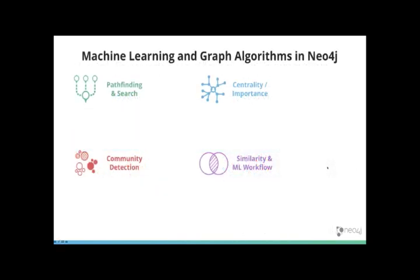Now, when we consider the graph algorithms, there's many machine learning and graph algorithms in the Neo4j library. We've got pathfinding and search, which is often about finding that optimal path or looking at a route or looking at the quality of route, which might be capacity as well. How much capacity do I have from A to B?